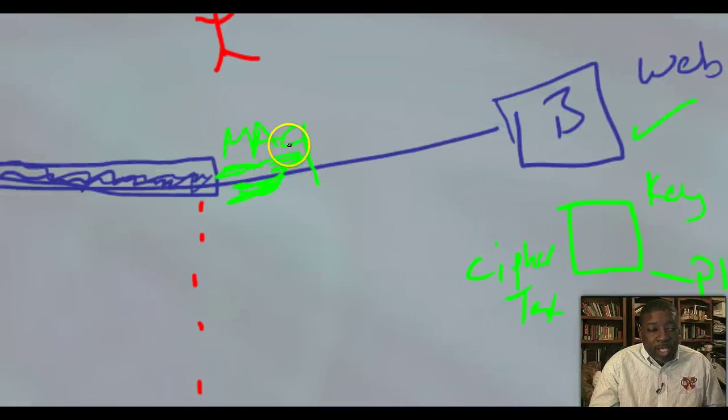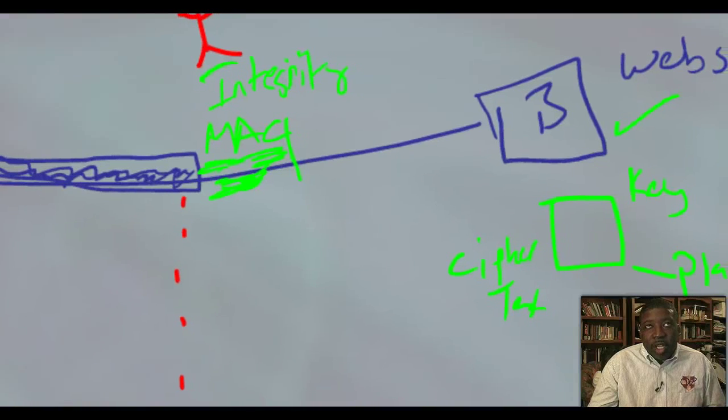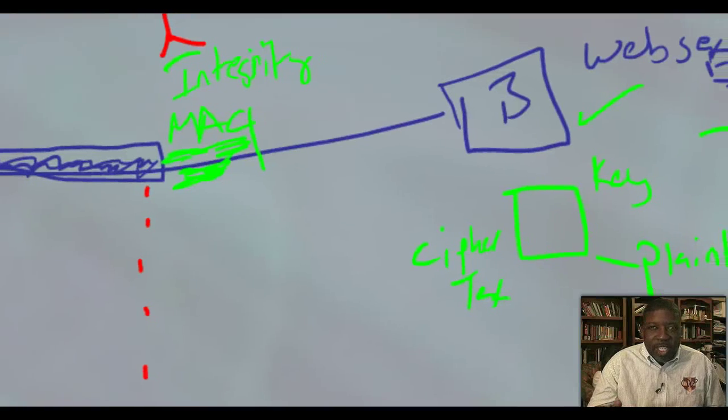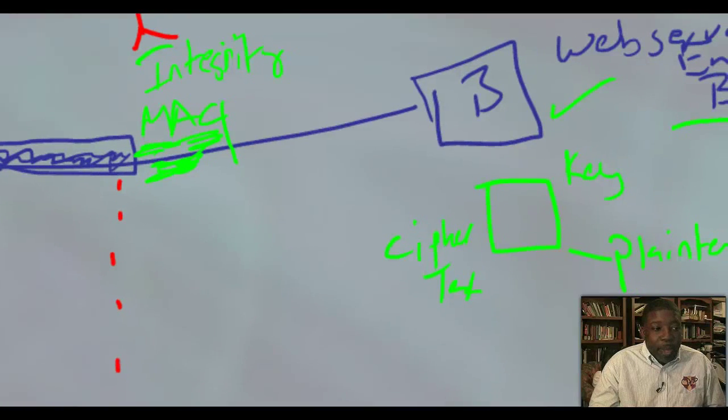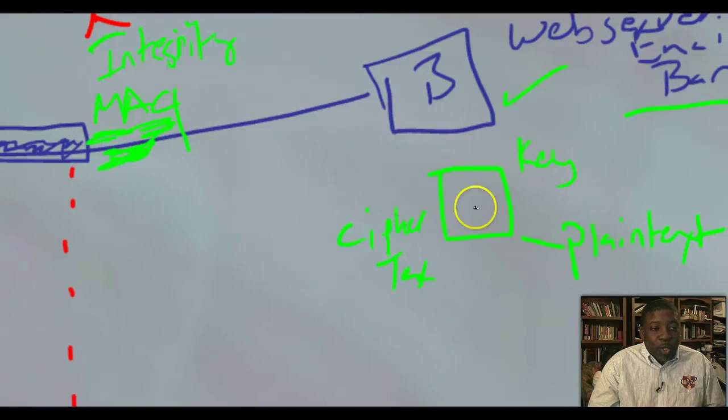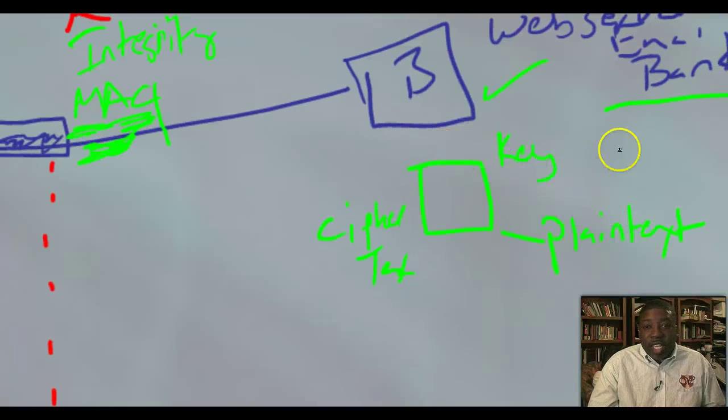And the MAC, the message authentication code, which serves as integrity checker, some type of checksum. In one of my earlier videos, I talked about the CIA, the triad of security. It has to have confidentiality, integrity, and availability. And that MAC serves as the integrity checker. All right, so when you get your key, your ciphertext, you get your key, plain text. So that's how encryption works.